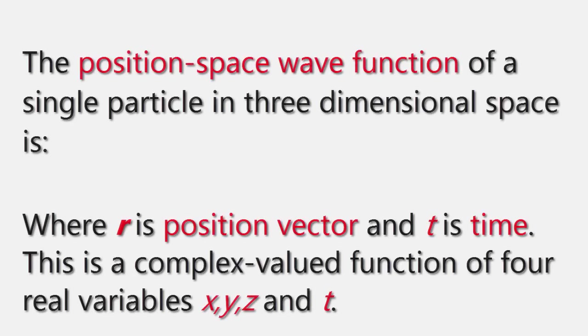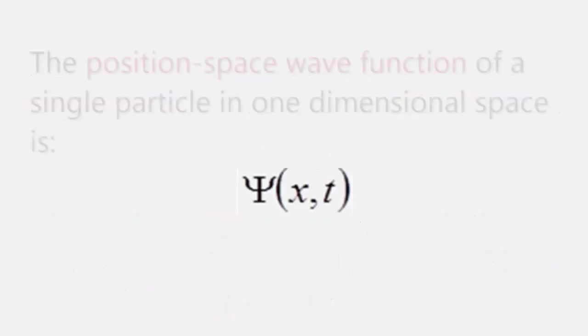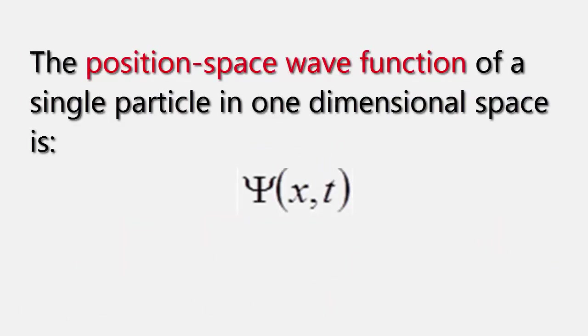The position space wave function of a single particle in three-dimensional space is ψ(r, t), where r is the position vector and t is time. This is a complex-valued function of four real variables x, y, z, and t. The position space wave function of a single particle in one-dimensional space is ψ(x, t).